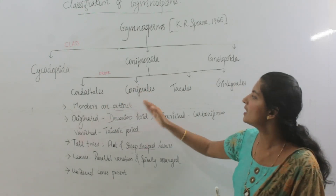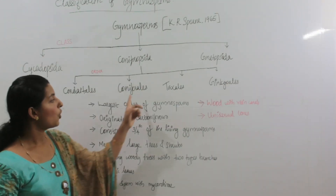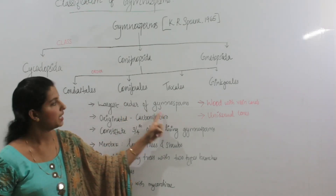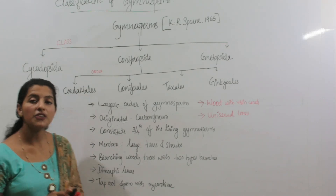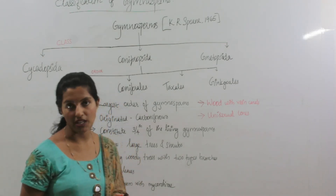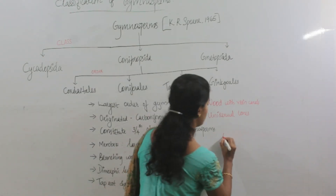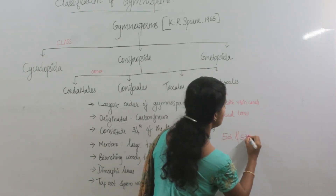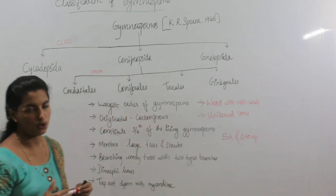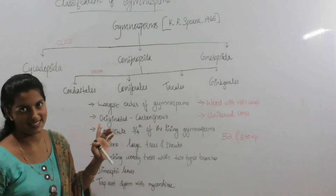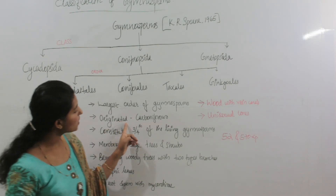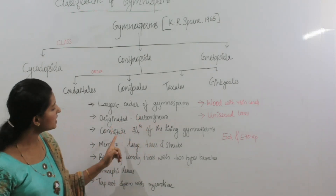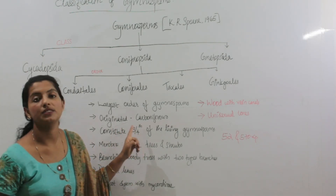Moving to the second order, Coniferales — Coniferales are the largest order of gymnosperms. There are about 52 genera and 570 species. It originated in the Carboniferous period and has not yet vanished; it constitutes three-fourths of the living gymnosperms.